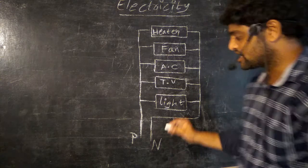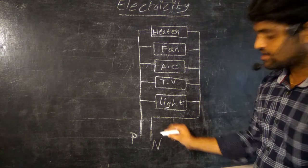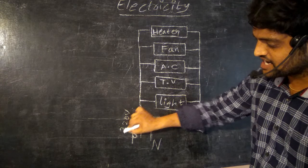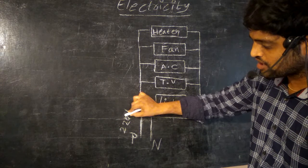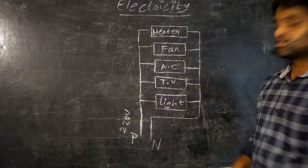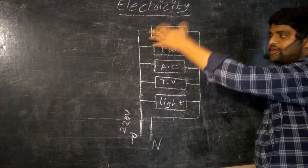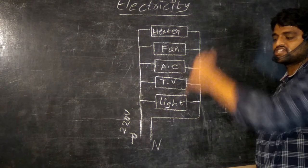So every household in our country is supplied between 220 volts to 240 volts. Generally our devices can hold the voltage up to 220 volts. These devices are connected in parallel. That's why this connection is said to be parallel connection.